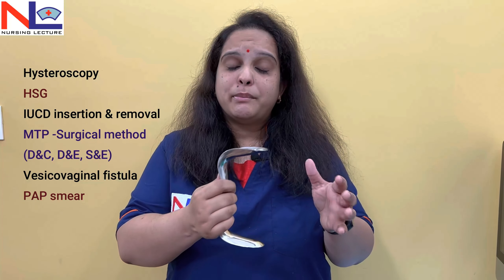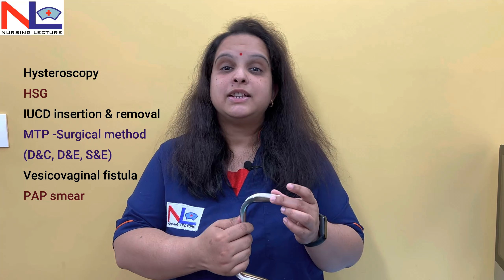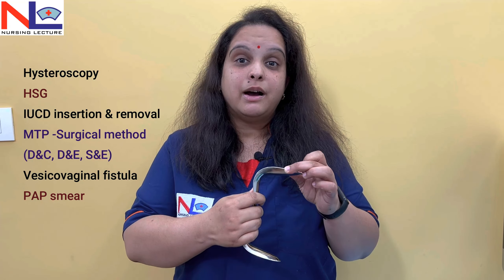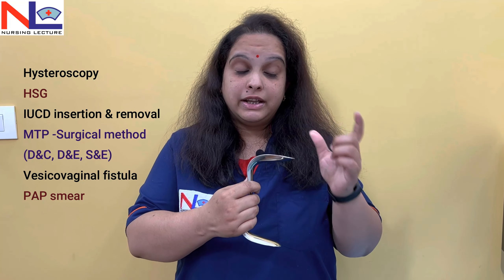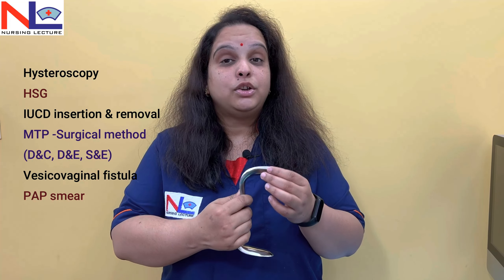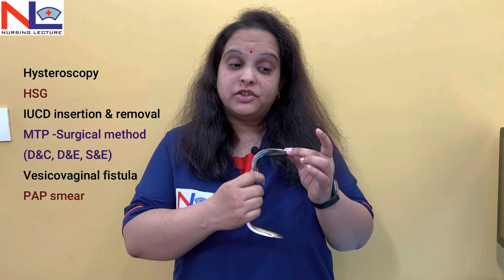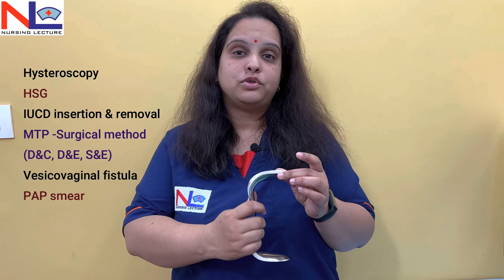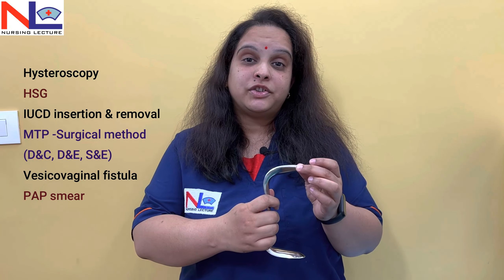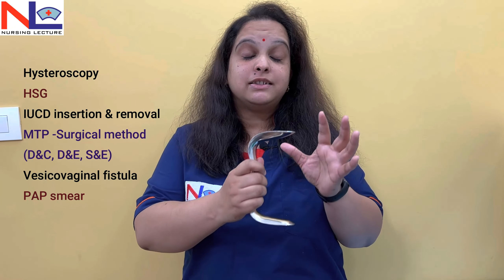Normally once the membrane ruptures, fluid comes out very forcefully, but if that doesn't happen, we can confirm membrane rupture by using this speculum to visualize the cervix. It can also be used in MTP procedures — if you want to medically terminate the pregnancy in abortion cases — where we can perform dilatation and curettage or dilatation and evacuation. We can retract the posterior vaginal wall, and even if we want to check whether a vesico-vaginal fistula is present — meaning an opening between the bladder and the vagina — we can retract the posterior wall. There are many major and minor surgeries in which we can retract the wall and visualize the cervix and vagina.